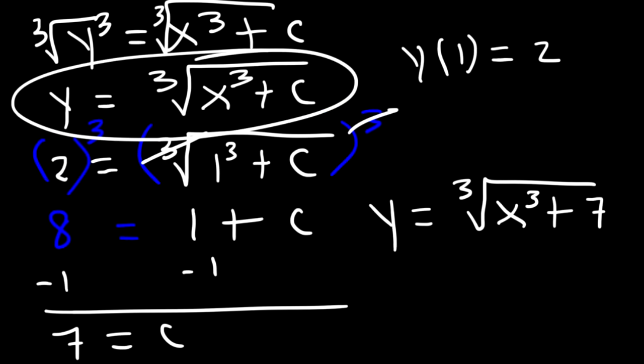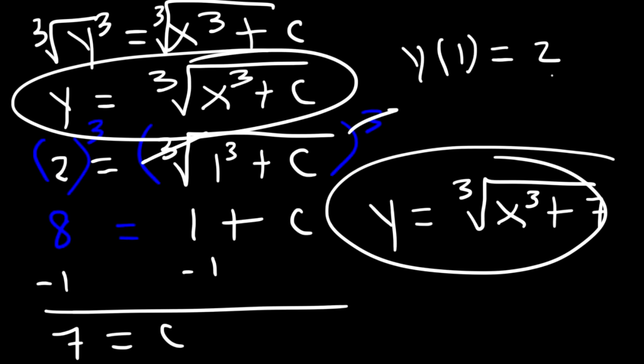So the particular solution is y is equal to the cube root of x cubed plus 7. This is the general solution and this is the particular solution given the initial condition. Let's work on another example.